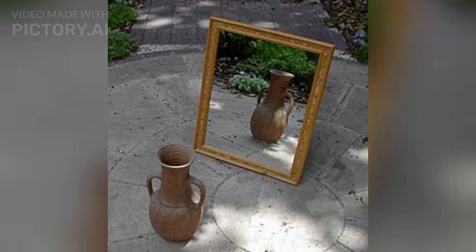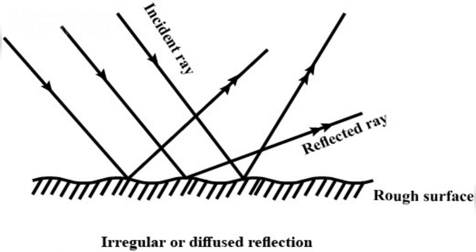Types of Reflection: But wait, there's more. Reflection comes in two flavors, regular and diffuse. Regular reflection, like the one in mirrors, creates a clear and sharp image. On the other hand, diffuse reflection scatters light in different directions, like what happens with rough surfaces.